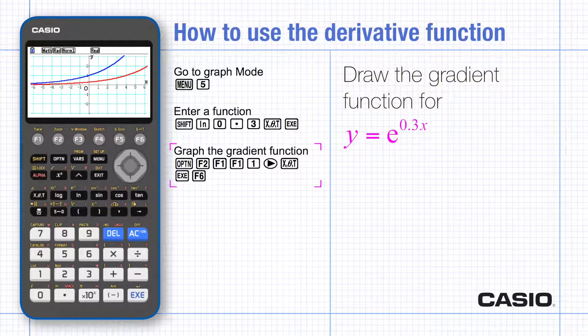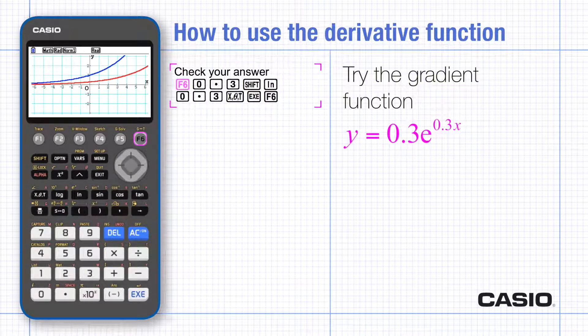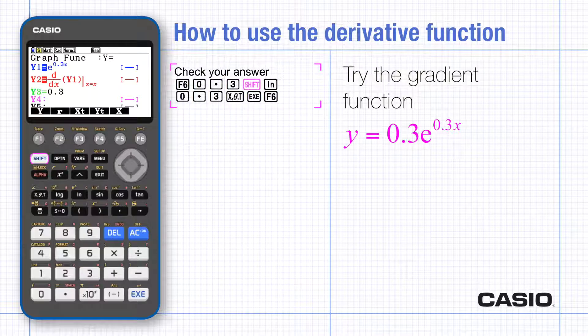To check this you can add that function to your list. Exit graph and type y equals 0.3 e to the 0.3 x into y3.